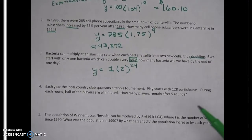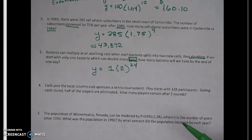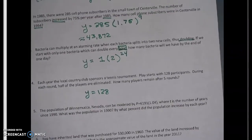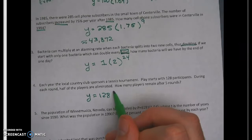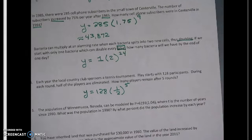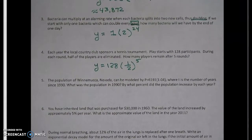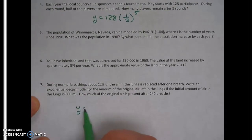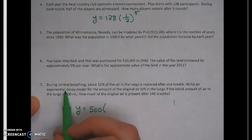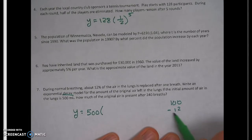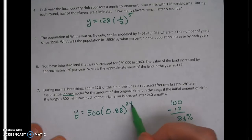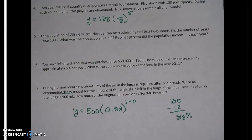Those were all growth examples. If something decays, like problem four about halving — you start at 128 and each is halved — the growth factor is 0.50, or you can simply put one-half in there. Problem seven talks about losing 12% of air, starting at 500 milliliters. If you decrease by 12%, you're left with 88%, so you write it as 0.88. In this case it was per breath, raised to the 240th. That's exponential decay.